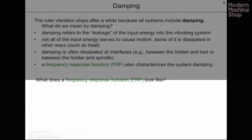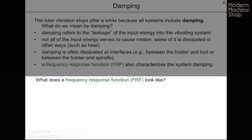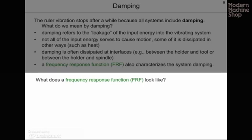We know that after some time the ruler will stop vibrating, because all physical systems include some damping. Damping refers to the leakage of the input energy into the vibrating system — not all of the input energy serves to cause motion; some of it is dissipated in other ways, particularly as heat. Damping is often dissipated at interfaces, for example between the holder and tool or between the holder and spindle. A frequency response function also characterizes the system damping.